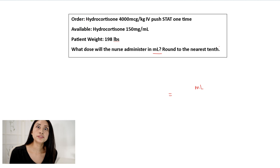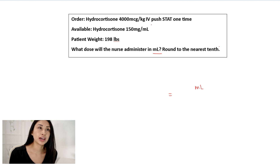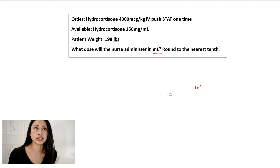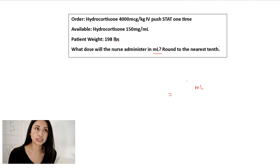So what other information is available? I see an order for hydrocortisone 4,000 micrograms per kilogram IV push STAT one time. I see available that I have hydrocortisone 150 milligrams per milliliter. I see a patient weight of 198 pounds. And then I see the question that they're asking of me. Based off of the information provided, I know that I need to find milliliters.